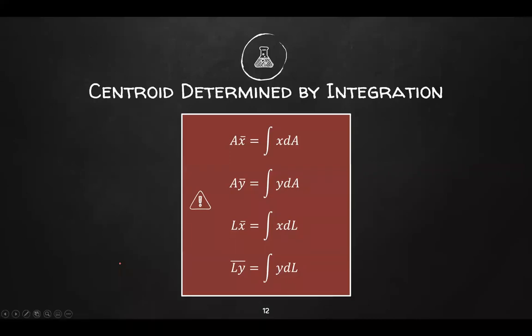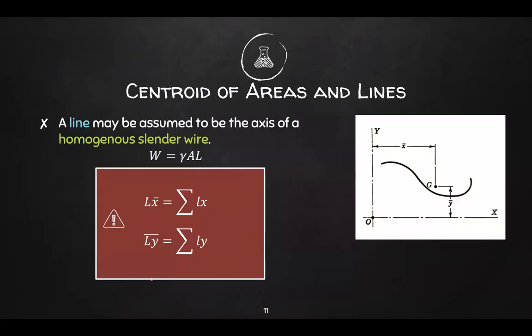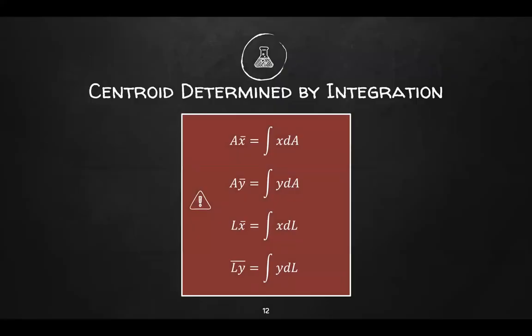Whenever we want to take the summation of a very small (infinitesimal) area, we use integral calculus. So another way to solve for centroid is: A·x̄ = integral of x dA, A·ȳ = integral of y dA, L·x̄ = integral of x dL, and L·ȳ = integral of y dL, where dA and dL are the differential area and length respectively.